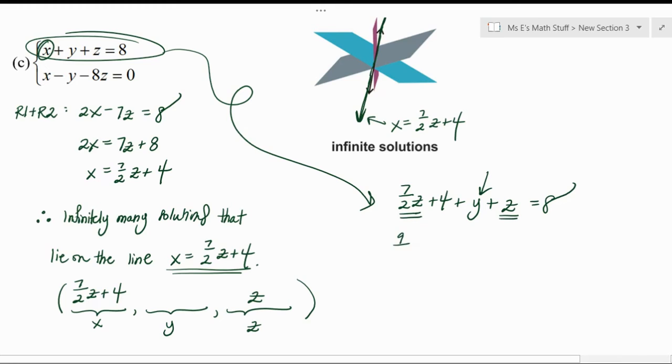So let's see, 7/2 z plus z would be 9/2 z plus 4 equals 8, plus y. And let's subtract that 4 over, so we'll just have 4, and then subtract 9/2 z. There we go.